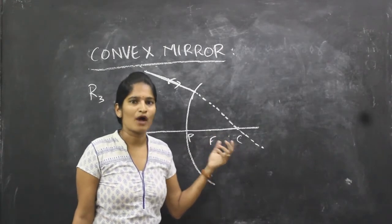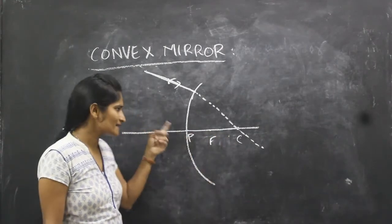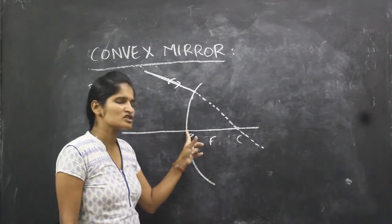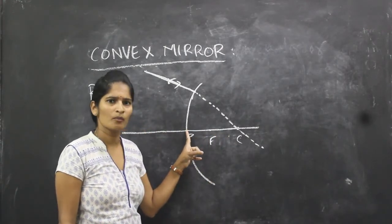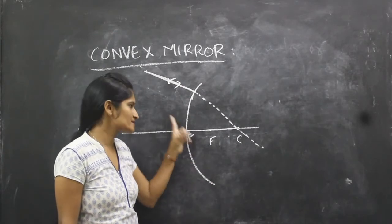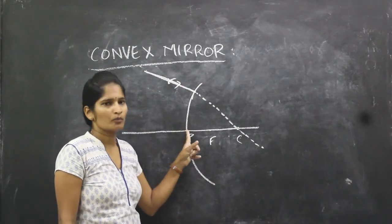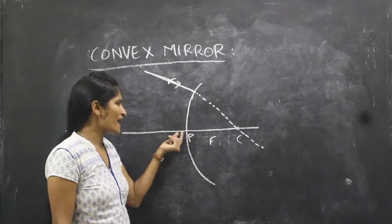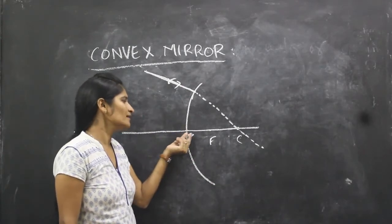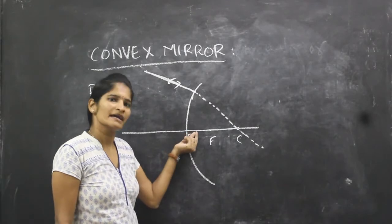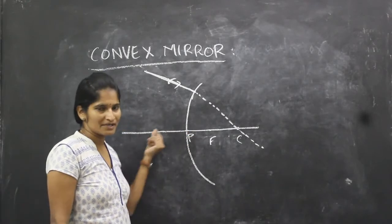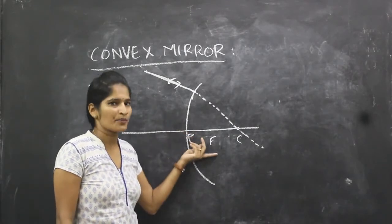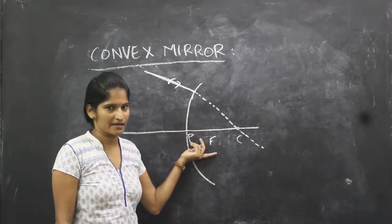The fourth rule is R4 — the ray which passes through the pole, or which is incident at the pole. When a ray passes through the pole, it travels in the same path but in the opposite direction.